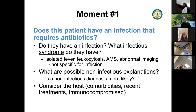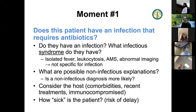You also have to consider the host: what comorbidities could lead to infectious or non-infectious concerns? What recent treatments have they had? Do I need to think about resistance? Are they immunocompromised — could disease present abnormally or with delayed presentation? And how sick is the patient? What is the risk of delay? If I defer this decision 48 hours or as an outpatient, what's the risk? We're balancing all of these things, but it all comes back to: does this person require antibiotics?